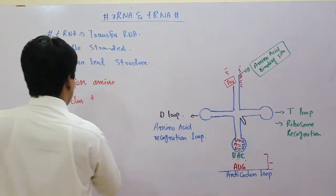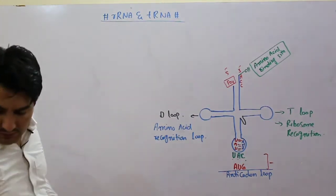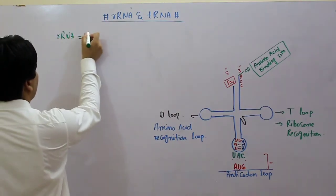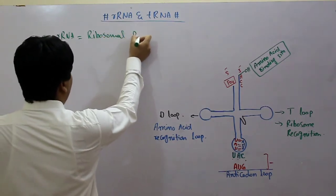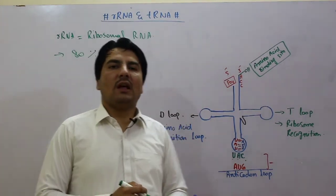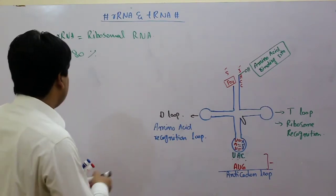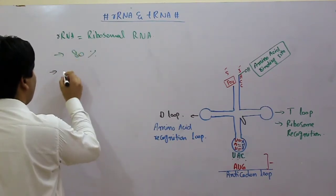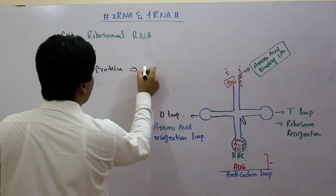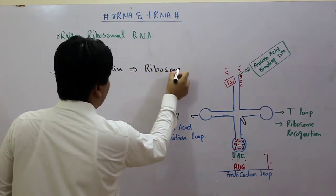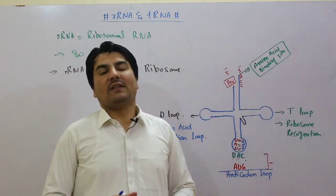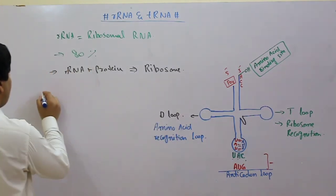The next one is ribosomal RNA, which is the most abundant RNA in the cell. Isko ribosomal RNA ya rRNA kehte hain. This is about 80% of the total RNA — cell ke andar jitna bhi RNA hai, 80% wo ribosomal RNA hota hai. Ribosomal RNA plus proteins mil jate hain to ek nucleoprotein banta hai jise ribosome kehte hain. Ribosome ke bina translation nahi ho sakti, isliye ribosomal RNA is an important component of protein synthesis.